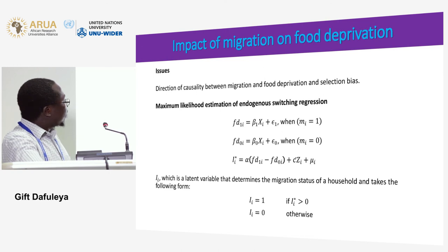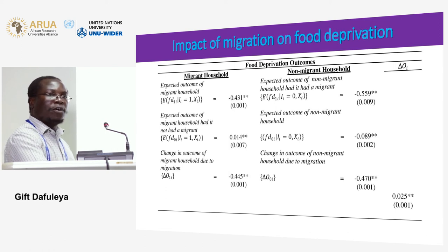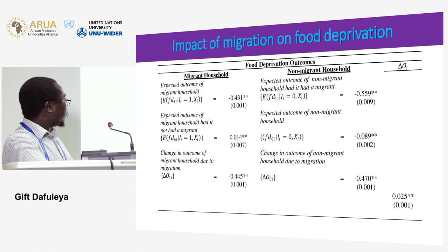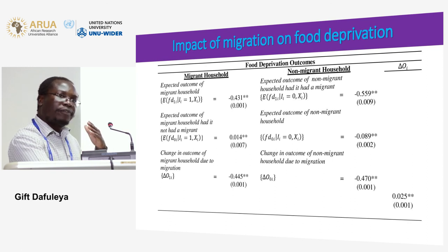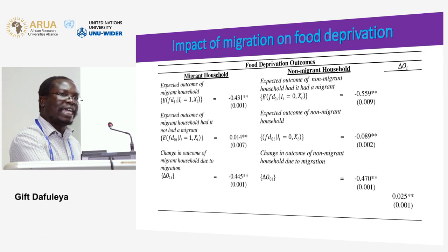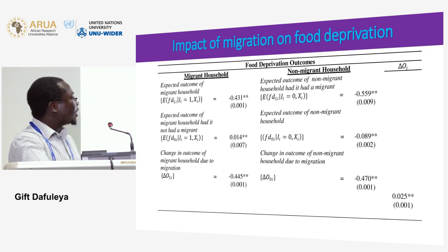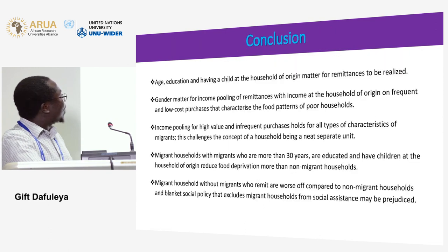I use a switching regression model to look at the impact of migration on food deprivation. Migrant households reduce food deprivation by 45 percentage points and do better than non-migrant households, who in their own right reduce food deprivation by 8.9 percentage points. However, non-migrant households would have done much better had they had a migrant — they would surpass migrant households by 25 percentage points.